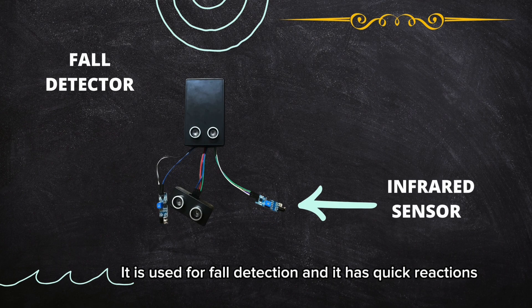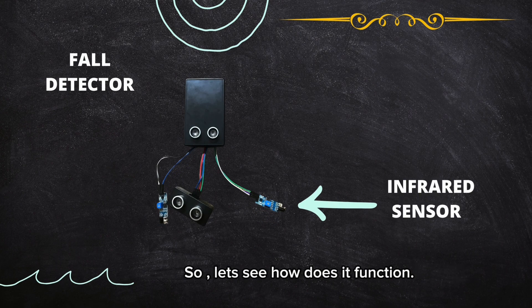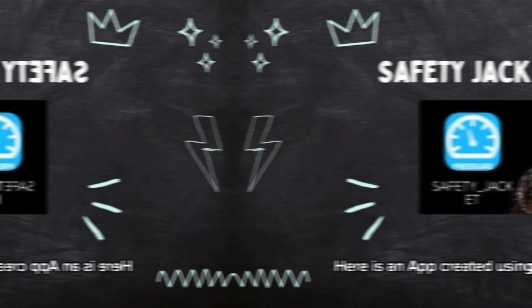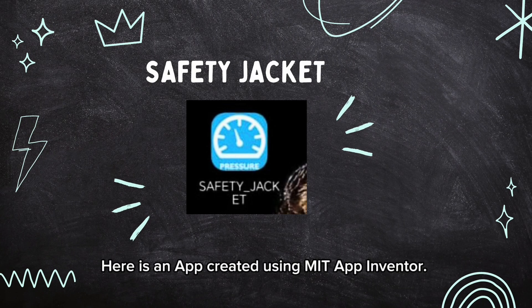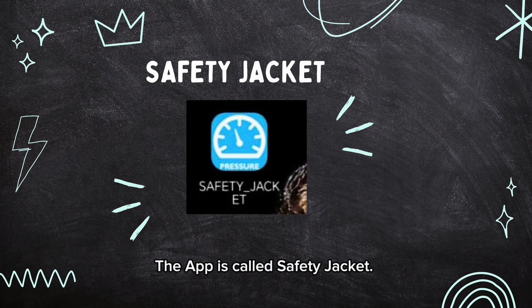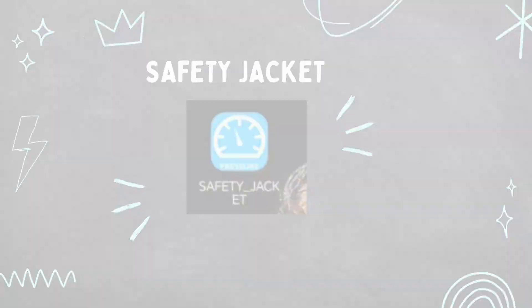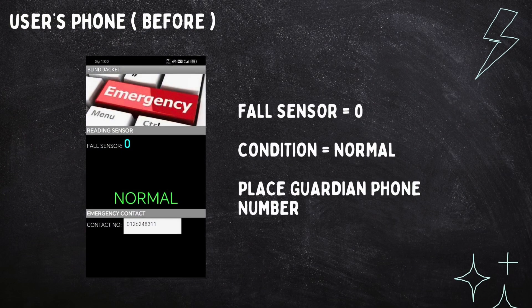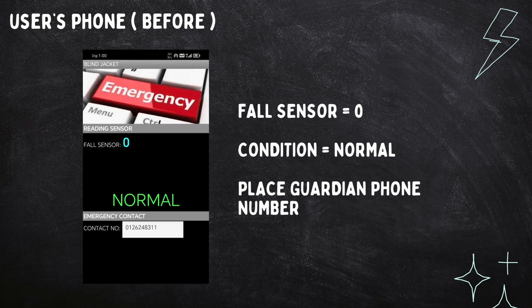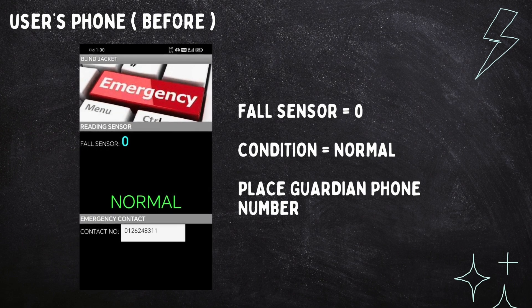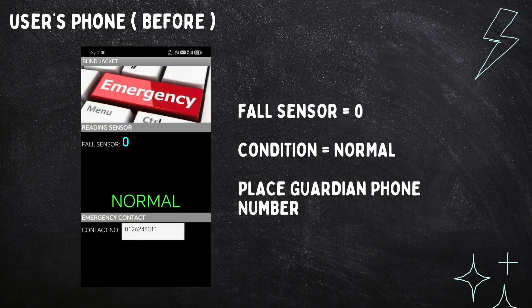This is the infrared sensor, which is used for fall detection and has quick reactions. Here is an app created using MIT App Inventor. The app is called Safety Jacket, and its purpose is to have a connection between the guardian and the user. Here we are in the Safety Jacket app — the fall sensor is zero and the condition is normal.